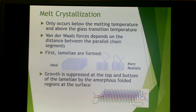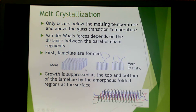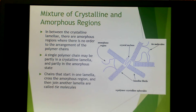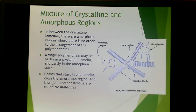Crystallization from the melt only occurs below the melting temperature and above the glass transition temperature. Van der Waals forces depend on the distance between the parallel chain segments. First you get lamella that form — here you have an ideal lamella, and here a more realistic one with amorphous chain folding. Growth of the crystallite is suppressed at the top and bottom because of these amorphous folded regions. In between the crystalline lamella there are amorphous regions with no order. A single polymer chain may be partly crystalline and partly amorphous. Chains that start in one lamella, cross the amorphous region, and join another lamella are called tie molecules, and these are very important.